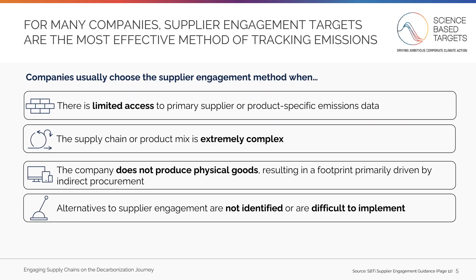There are many reasons why companies might choose a supplier engagement target. You might choose this method if: first, there is limited access to primary supplier or product-specific emissions data; second, your supply chain or product mix is extremely complex; third, your company does not produce physical goods, resulting in a footprint primarily driven by indirect procurement; or lastly, alternatives to supplier engagement are not identified or are difficult to implement.